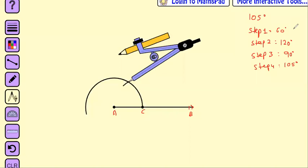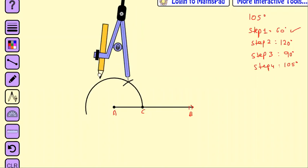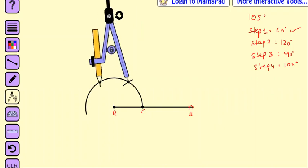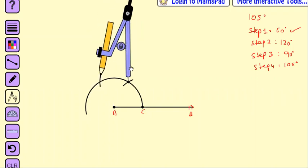So, 60 is done, now I will focus on 120. So, if I draw an arc over here, it will be my 120, I hope this thing is clear from the previous videos.